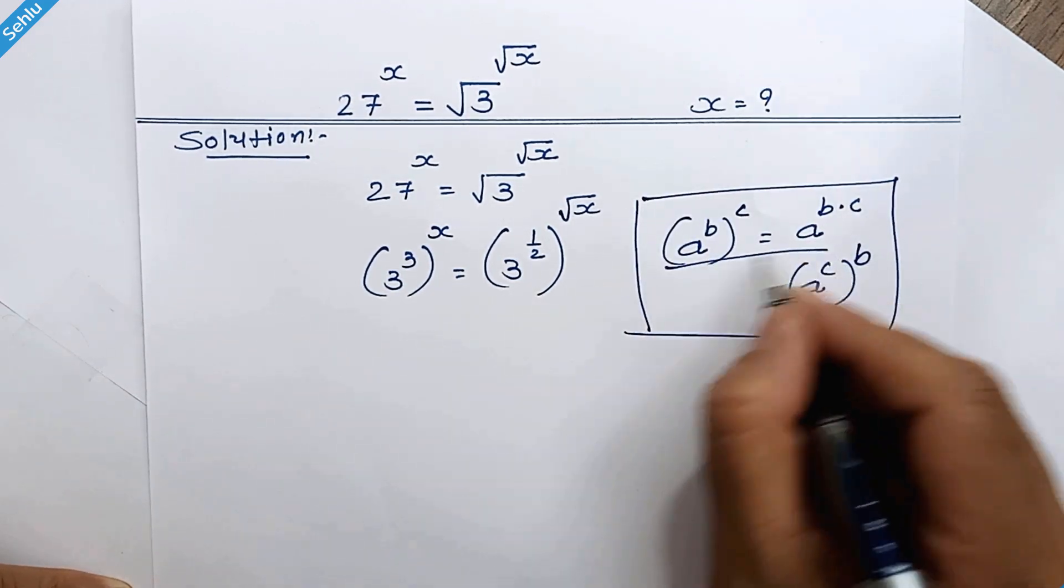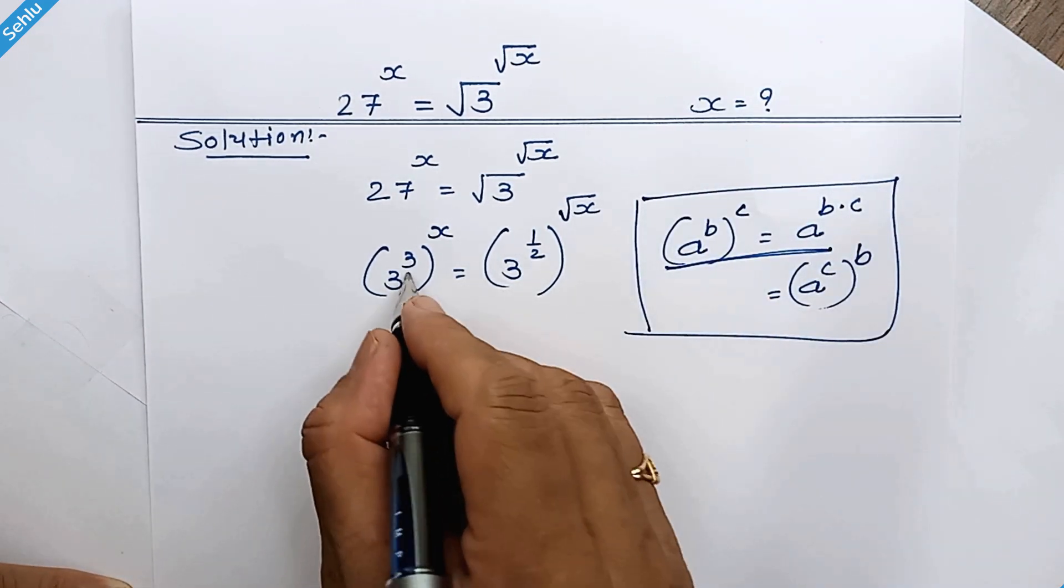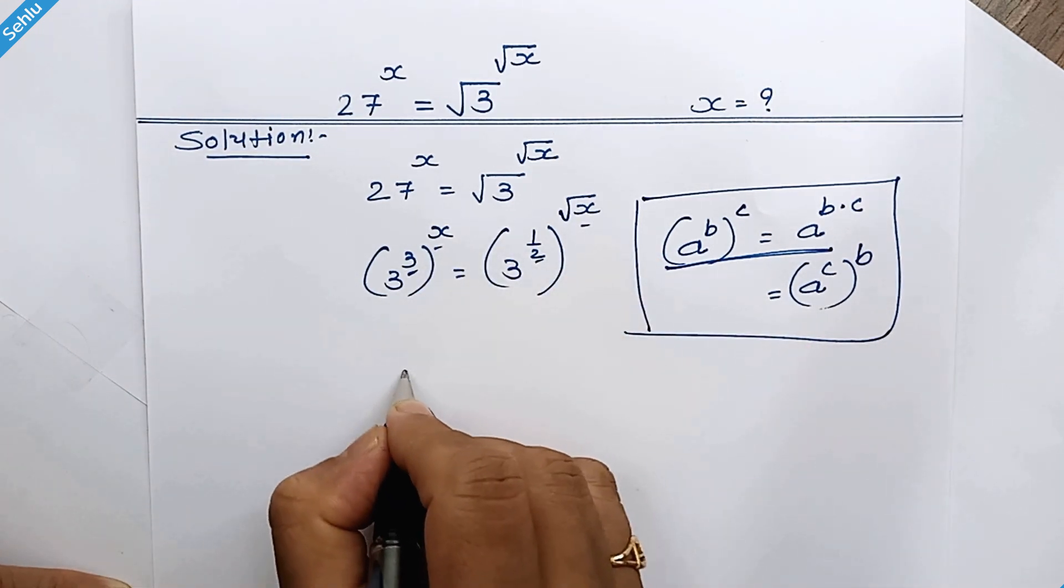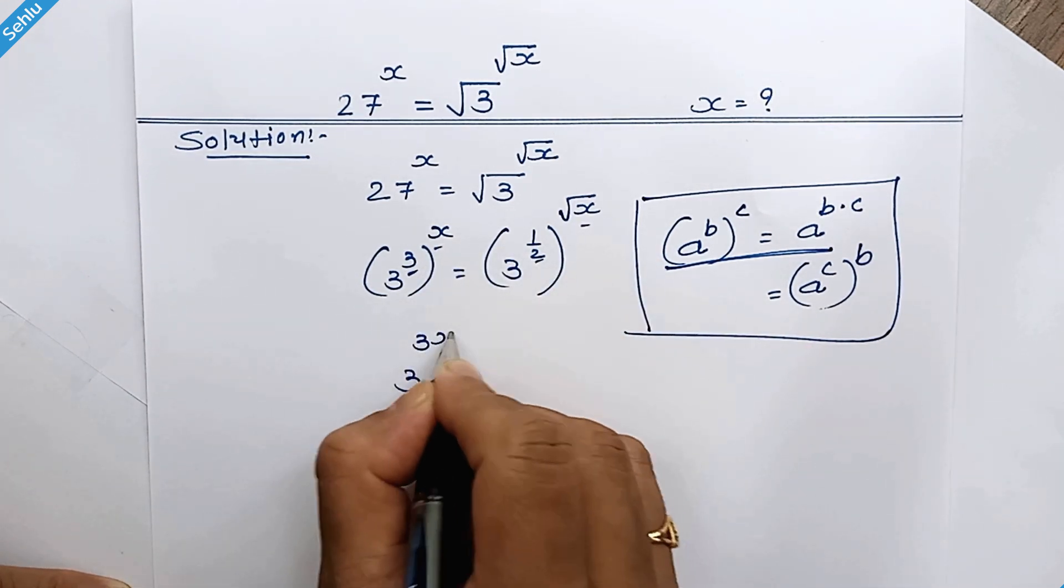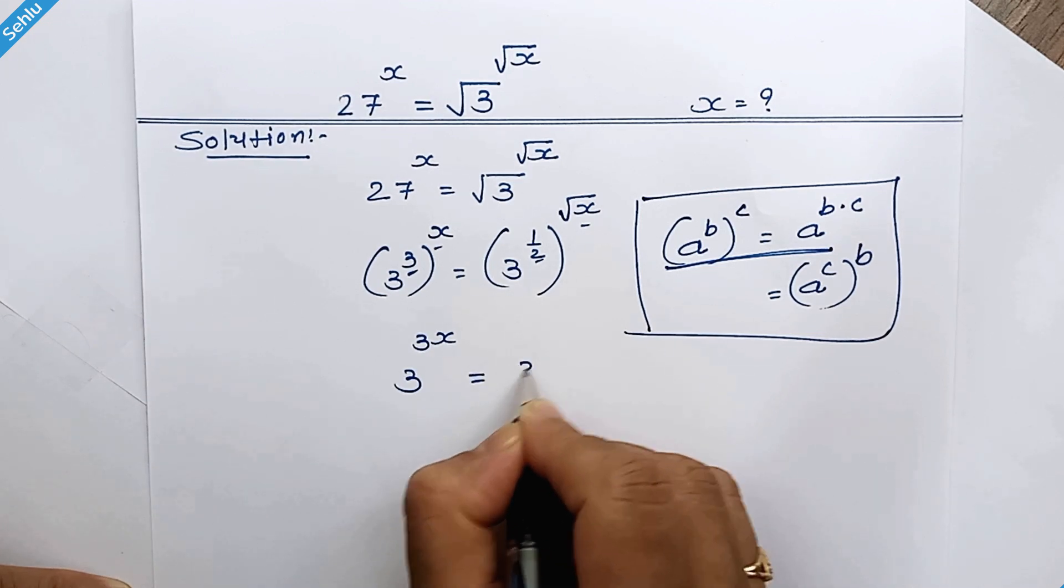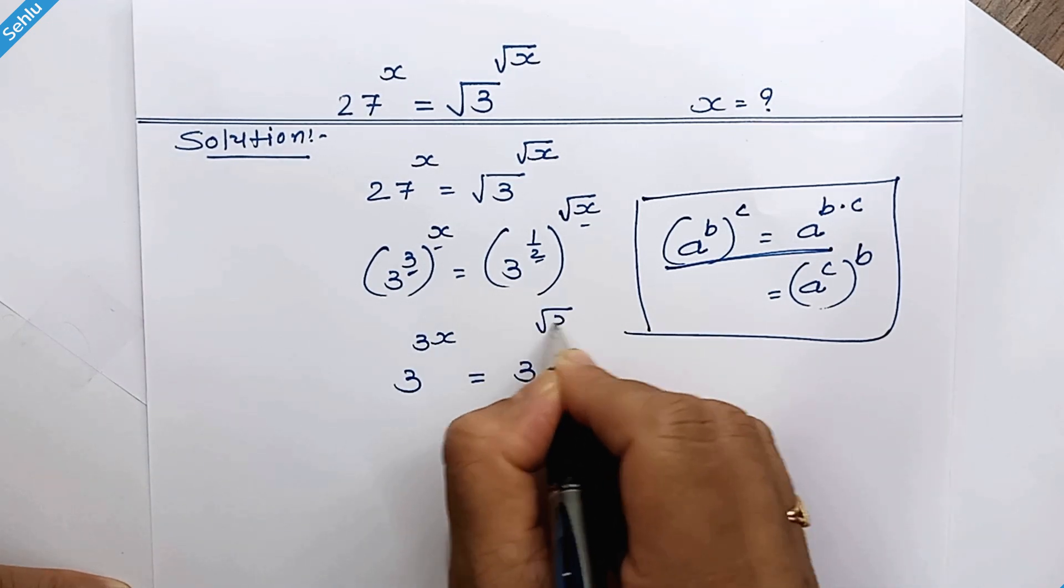So in this manner this 2 and this 2 can multiply so it will be 3 to the power 3x is equal to 3 to the power square root of x over 2.